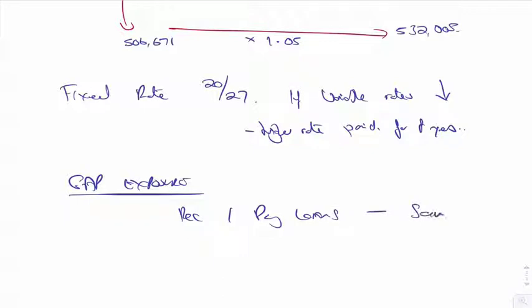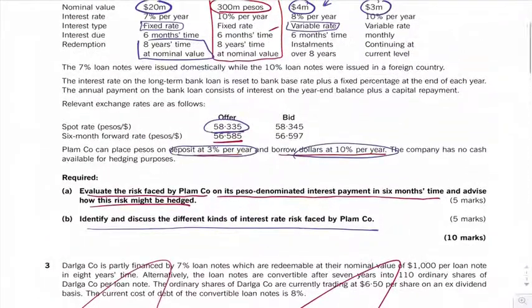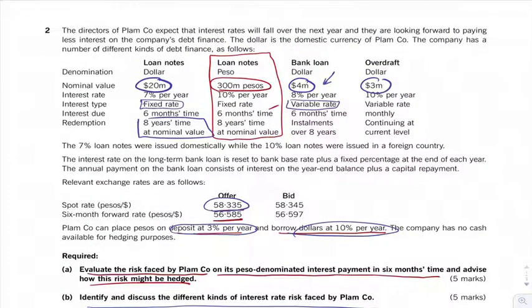same date or similar date is what I should say. And therefore you're going to net off. And obviously what you want to do, you want to have more receivables than you do payables and the difference between those two is your gap exposure. But this question didn't give you any receivable loans, etc., so actually you couldn't do it.